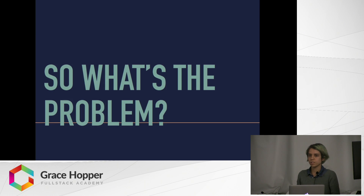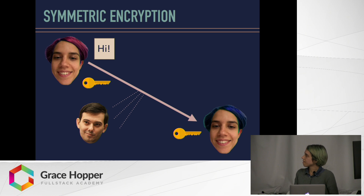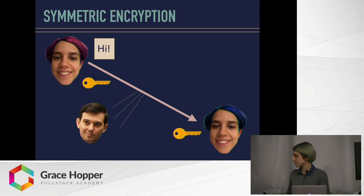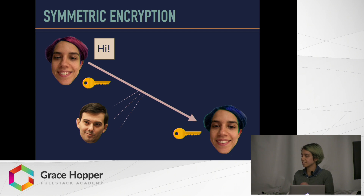So what's the problem? We're basically making a key assumption here — no pun intended — in that when person A is sending the key to person B initially, they're assuming that Martin Shkreli hasn't started listening in on the network. But if Martin Shkreli has started listening in at that point, there's nothing to stop him from grabbing that key, so that when I'm sending my message — which I think is encoded — Martin Shkreli has the key and can decode it just as easily as person B can.